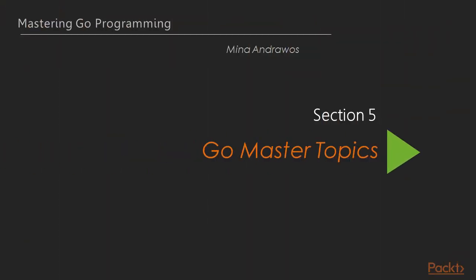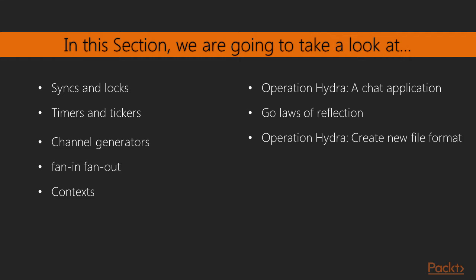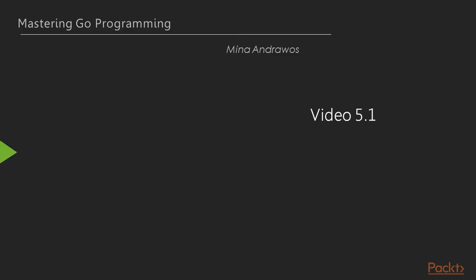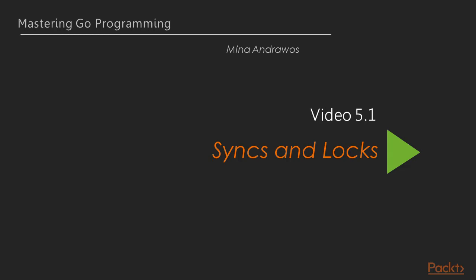Hello, and welcome to Section 5 of our journey into mastering the Go programming language. In the previous section, we covered another advanced topic, which was how to design object-oriented software in the Go language. In this section, we will dive deeper into advanced topics in the Go world. We will cover locks, timers, some important concurrency patterns, reflection, and we will build some pieces of the Hydra along the way. Now let's move to the first video in this section.